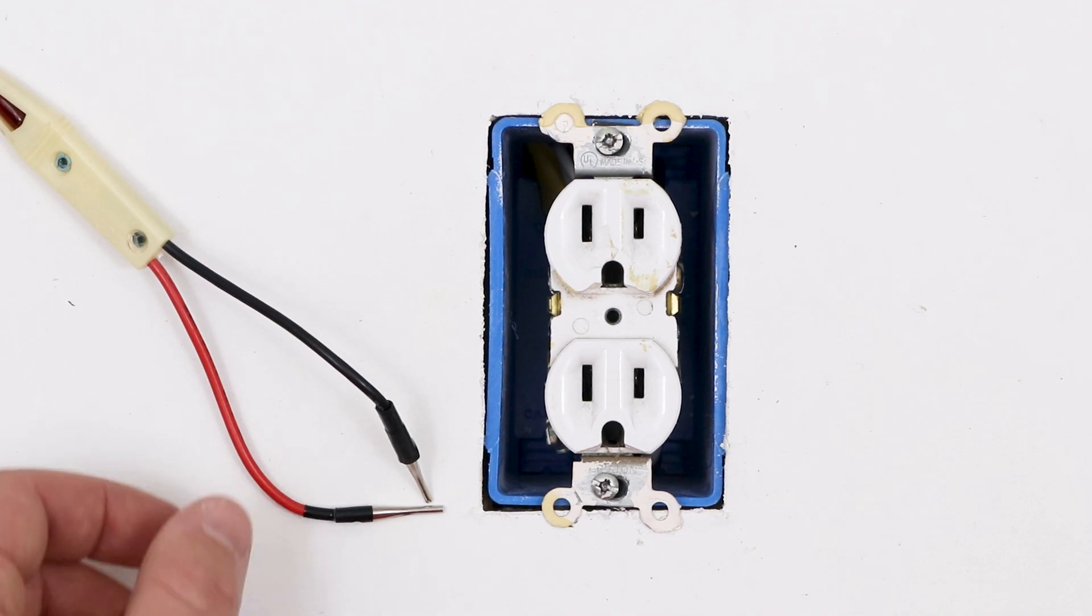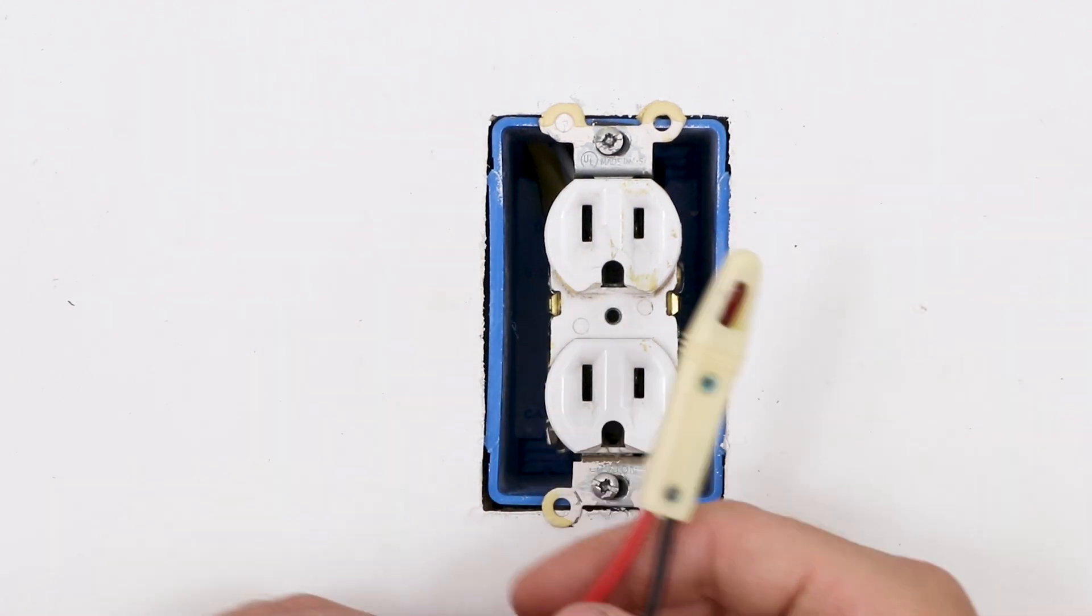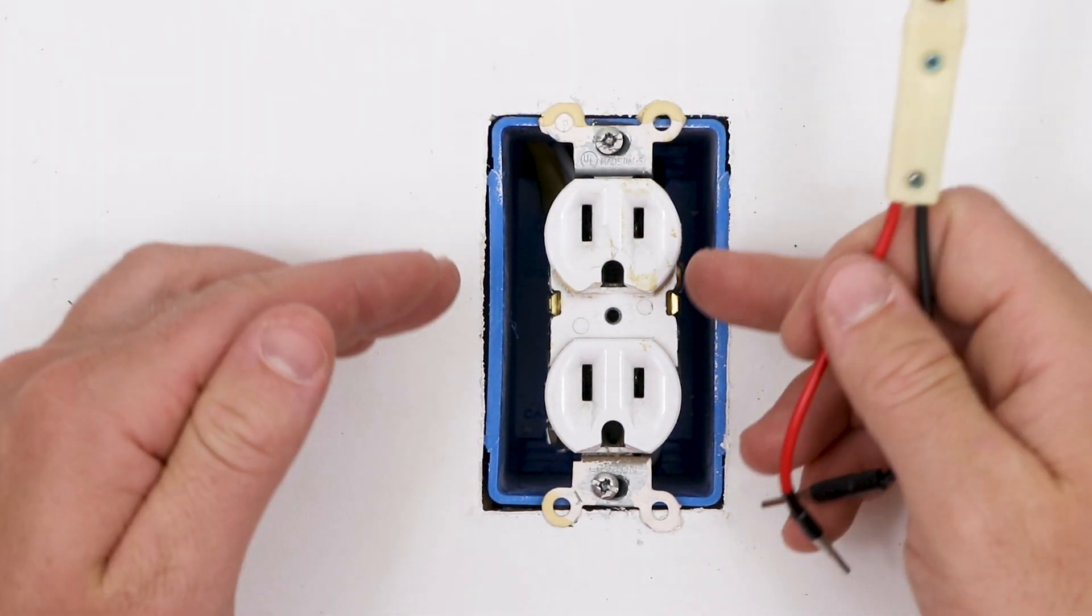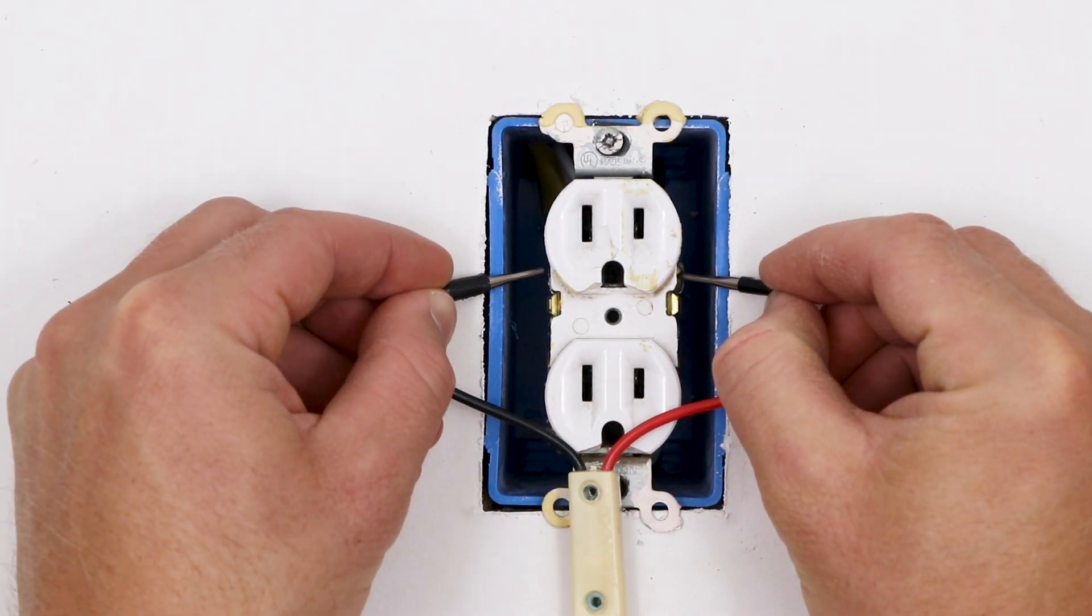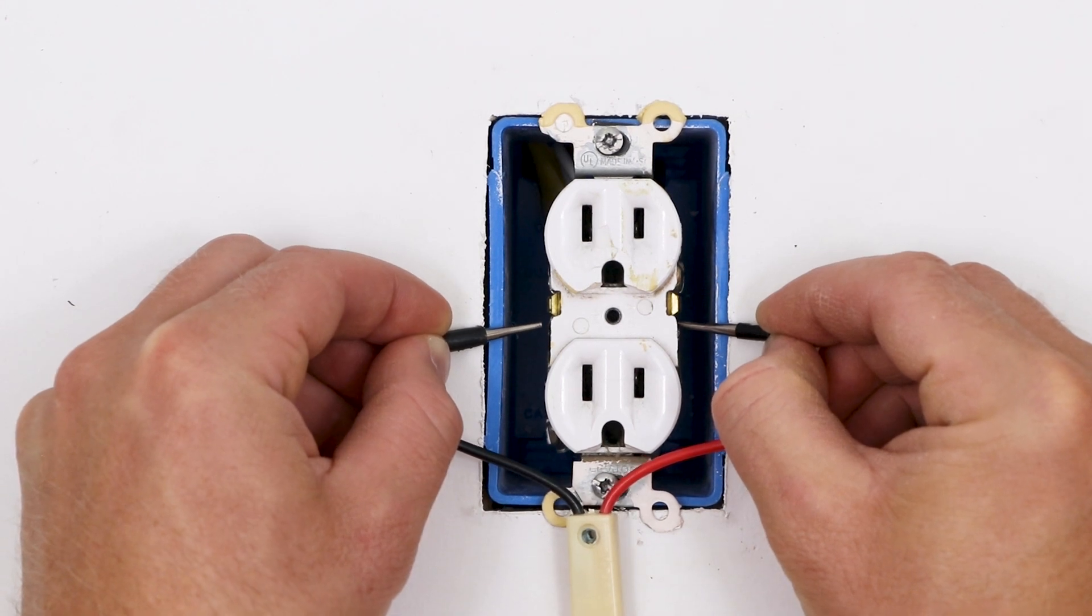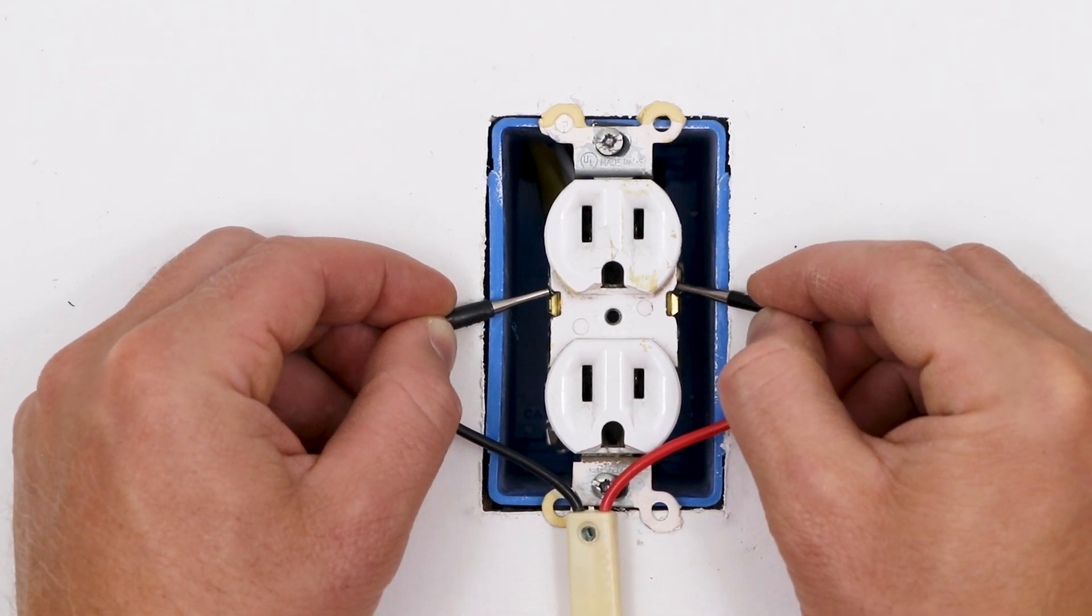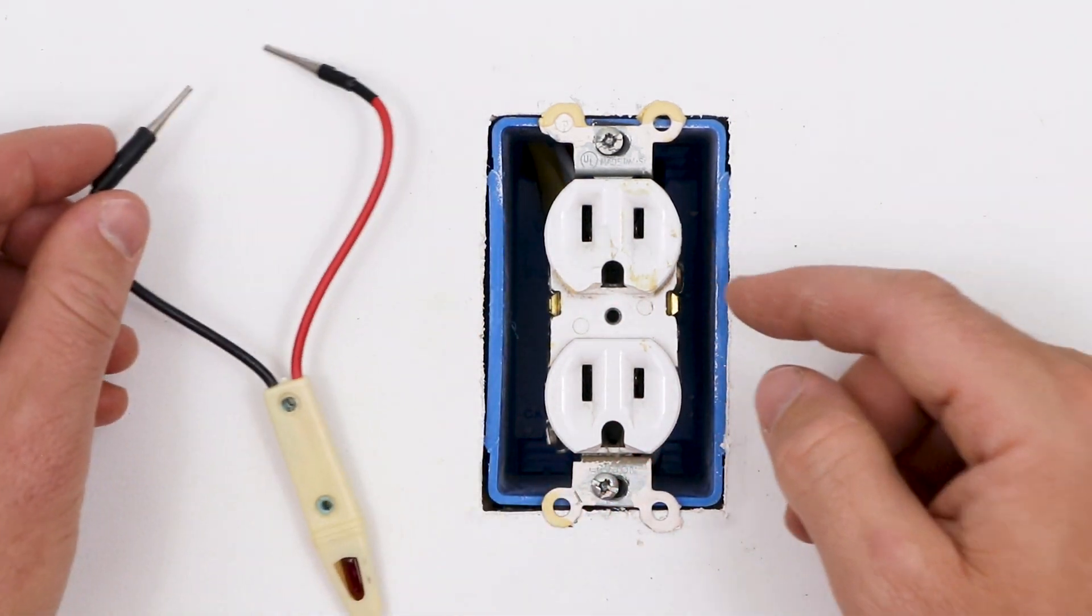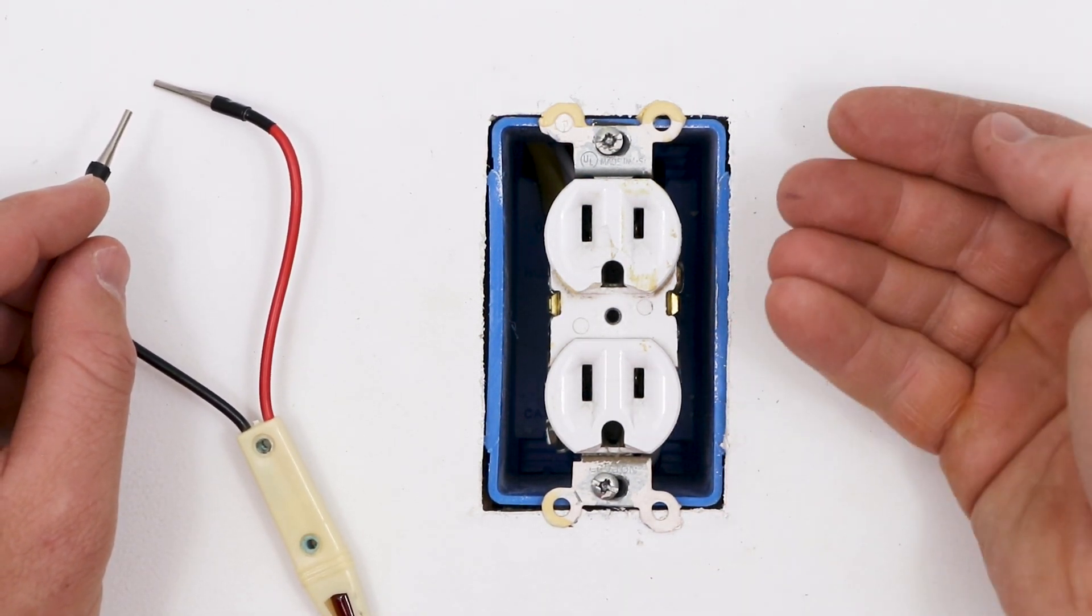With the faceplate removed, I can now use my voltage tester again to see if I can detect any voltage. There are a set of brass screws on this side and a set of silver screws on this side. Those are the screws that are typically used to connect our wires to the receptacle. I'm going to connect one probe to a silver and one to a brass screw. I'm going to check the other screws. I'm not detecting any voltage. If I could see any bare wire connected to a brass screw, I should connect one probe to that. I don't see any bare wires connected to either of these. That means that this fitting may be attached to the circuit via the push-in connectors on the backside.